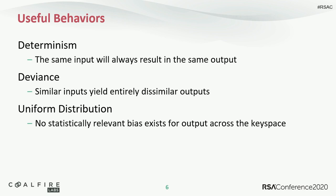So what are the features of hashing, and why is this what ultimately gets used? The first is determinism — the same input will always result in the same output. Second is deviance — similar inputs yield entirely dissimilar outputs; there's no correlation between the output of similar inputs. And lastly, uniform distribution. This was thought to be just a novel inclusion without much practical benefit, but some clever folks found useful ways to make use of it. There's no statistically relevant bias on what an output will be from a hash function — it's effectively random and evenly distributed across the potential key space.